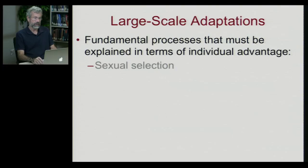We're currently surveying a number of important topics that have to do with very large scale adaptations. I've chosen these because they each involve fundamental processes that must be explained in terms of individual advantage. Last time we looked at sexual selection and we saw how it benefits males to, in a way, be boy toys and have long extravagant plumage in certain kinds of birds, if that gives the female a chance to find out his quality and thus have better offspring.